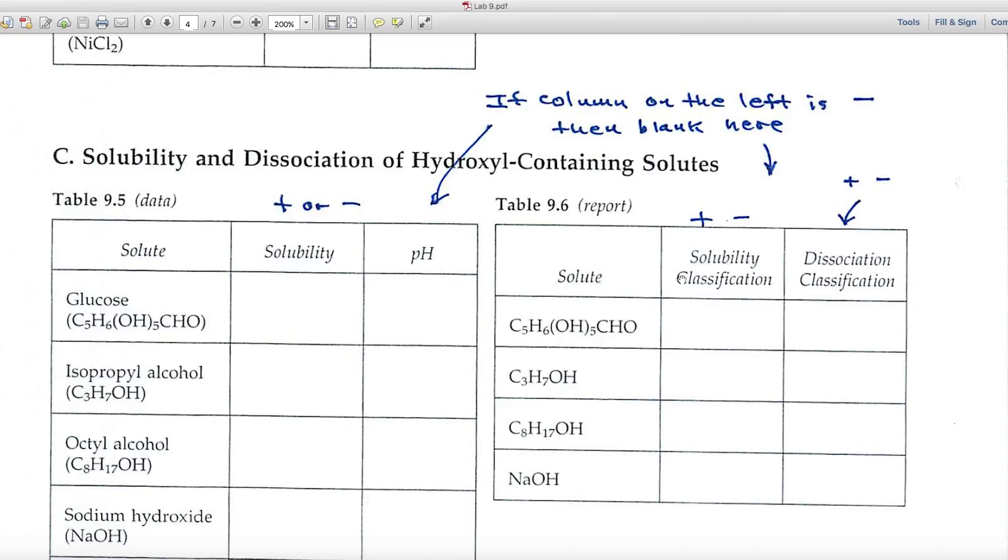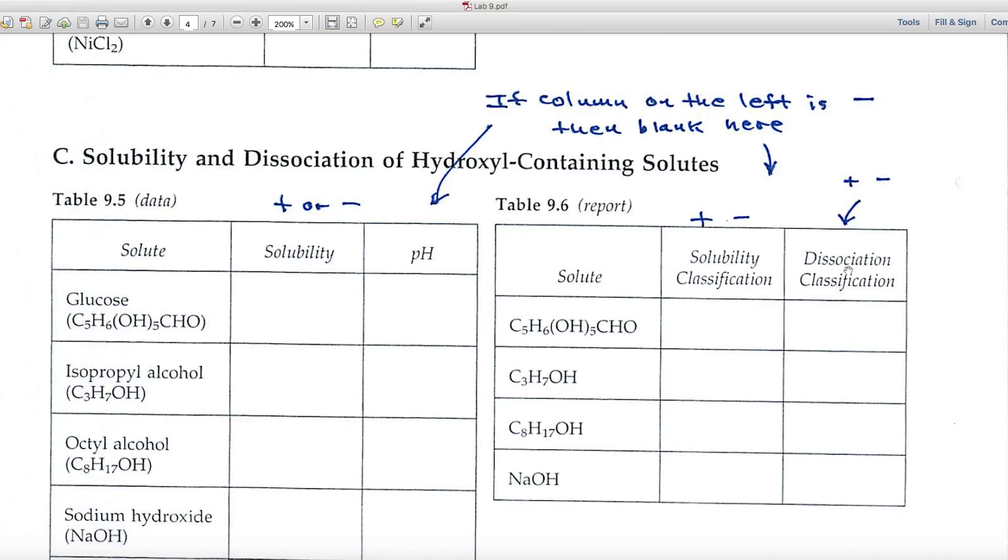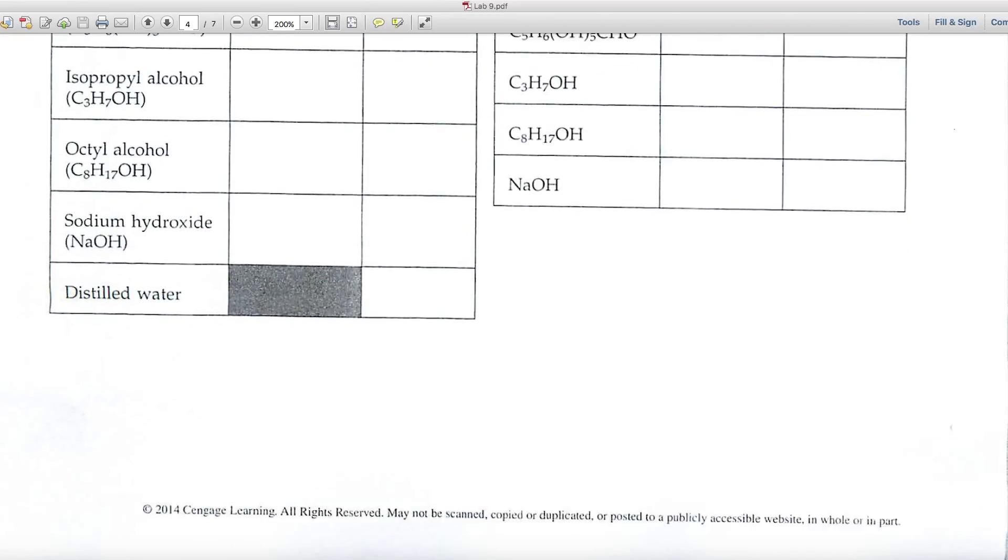Same thing is true in the report part. In the first column, indicate a plus or minus, depending on its solubility. In the second column, indicate with a plus, those that have dissociated and produced OH. And again, if you didn't have a plus here, this column will just be blank in that particular spot.